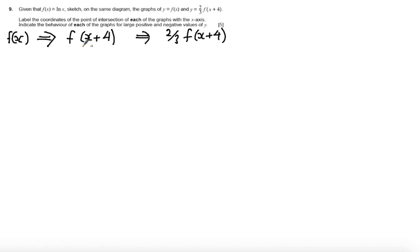This first transformation is a translation because we're adding a value to a function. It's inside the bracket so it's in the x direction, and because it's inside the bracket it does a reverse of what it says, so minus four places. That's the first transformation we're looking to apply.